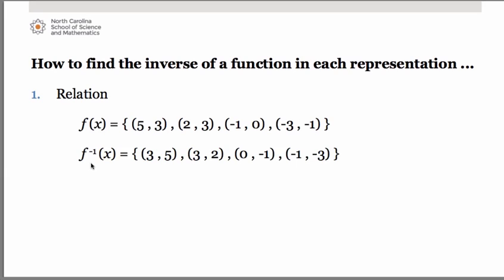The notation for the inverse of a function is f⁻¹(x). Therefore, we obtain the inverse: (3, 5), (3, 2), (0, −1), (−1, −3). The big question is whether or not this inverse is itself a function. Notice how the x value of 3 is paired with two different y values — 5 and 2. Therefore, this inverse is not a function itself.